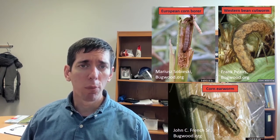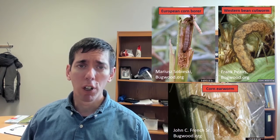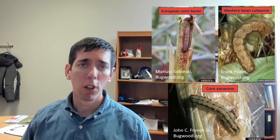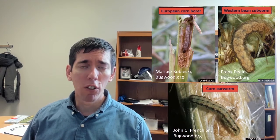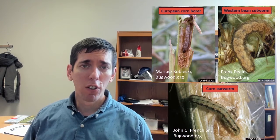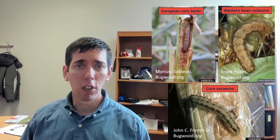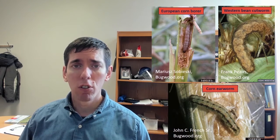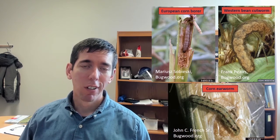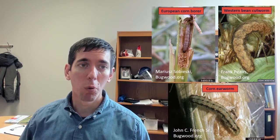BT traits in general, and control with BT traits in general, can be a complicated topic. It's even more complicated with the above-ground traits than with the below-ground traits, because we have multiple targets. When we look at these multiple insect targets — and these are the three that are going to be the most important in Illinois — they're certainly not the only three targets of the above-ground traits, but they're the three we're most concerned with. Each one of these three insect pests has a little different situation when it comes to BT traits and effectively managing resistance.